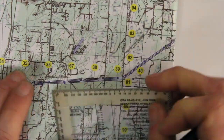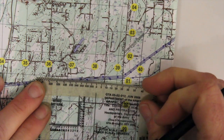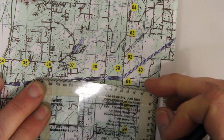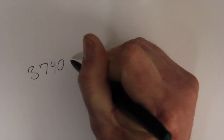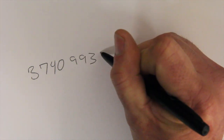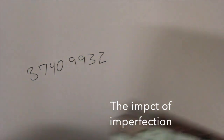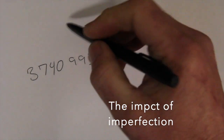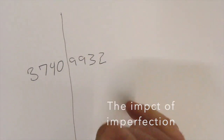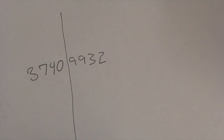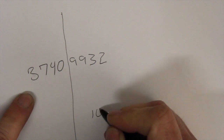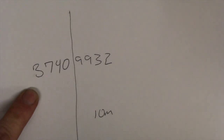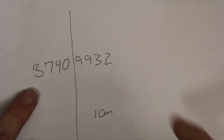Now reading upward, I get 9932. So my full eight-digit grid coordinate is 37409932. An eight-digit grid coordinate gives me a ten-meter plot — I know with certainty that building is at 37409932 within ten meters.